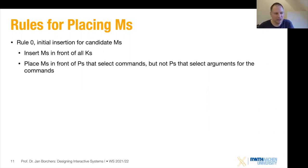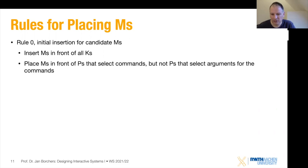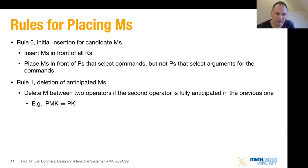The assumption is that you have a plan to open a particular file — you don't need to think twice about it. It's enough to think once, not twice. Now comes the first rule for removing Ms: if the second operator is fully anticipated in the previous one, remove the M between them. If my task is to click a button in the top left, I'm moving my mouse there and then clicking — I don't stop between the point and click. I just do the whole action. If they're fully anticipated, you remove the M in between.